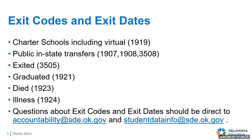At the end of the school year, we would want to see 3505, but that 3505 code can also be used if you've got a student going from a brick-and-mortar to a virtual environment or vice versa. For graduated students, it's going to be 1921. If a student has died, it would be 1923. If a student has left for illness, it's 1924. If you have any questions about the codes or the dates, those should be directed to accountability@sde.ok.gov or studentdatainfo@sde.ok.gov.